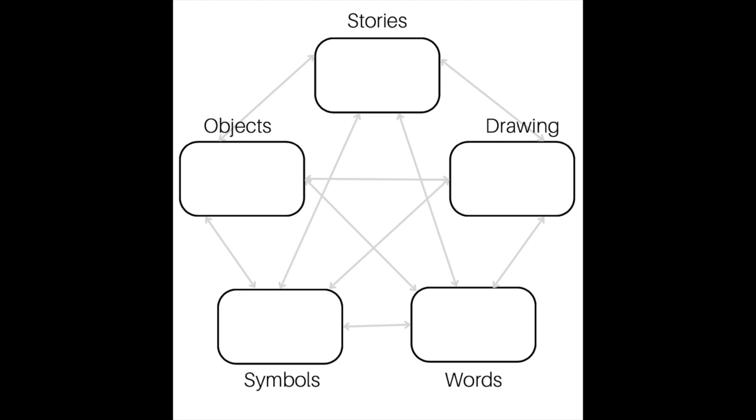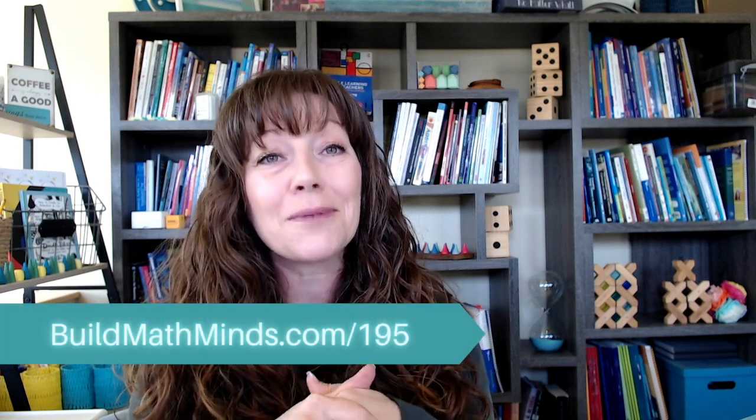Remember the Lesh translation model we've talked about previously — kids need to be doing all five of the different types of representations. If you only do the associative property, you are just doing the abstract or symbolic model with them. In the next episode, I'm going to share how to write problems like these into a real-life context, which is one of those models, and I also got that from the essential understandings book. If you don't have these essential understandings books, they cover all topics around mathematics — I'll link to the whole series over at NCTM on the show notes page at buildmathminds.com/195.